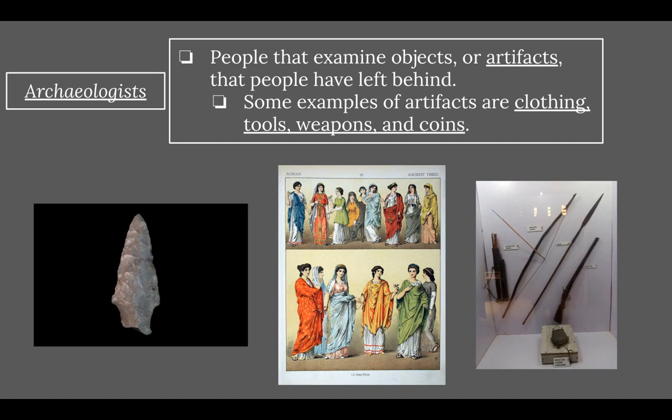Starting with archaeologists — these are people that examine objects or artifacts that people have left behind. Some examples of such artifacts would be clothing, tools, weapons, and coins. You can see a couple pictures here: there's an arrowhead, old clothes, and bow-and-arrow type weapons. Archaeologists ask questions like: Who lived in this place? When did they live here? What were they like? They study these artifacts for clues about how people lived.